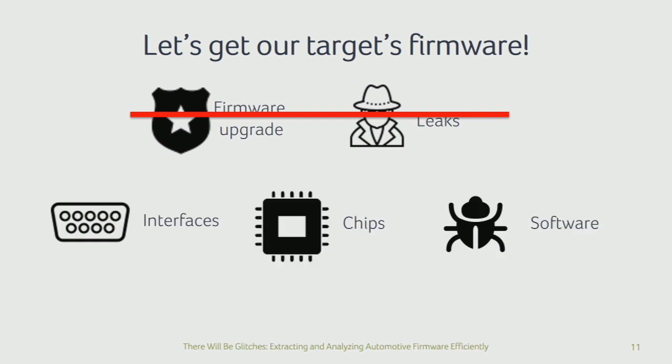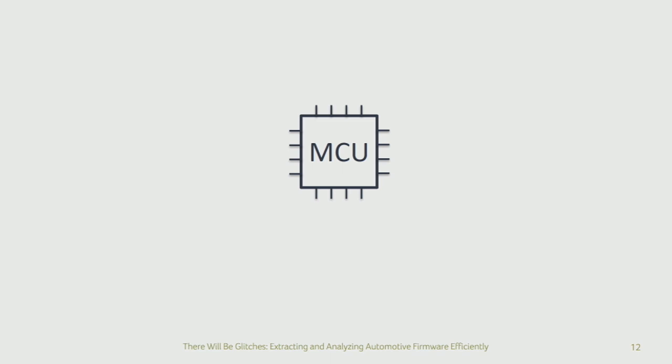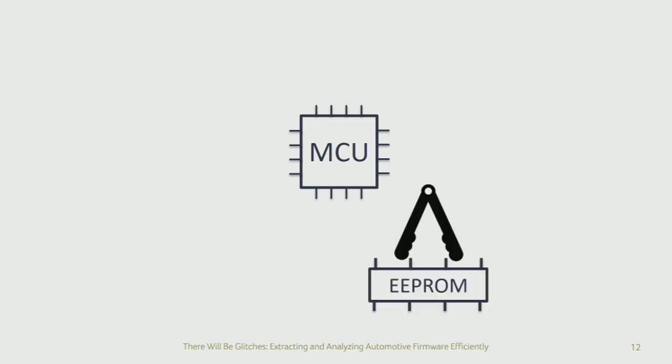With the dashboard in hand we started looking at the possibilities. There are some interfaces because the dashboard has to communicate with the rest of the car, and there's likely a chip running some form of software — but from outside we have no idea what's going on. Once we opened the device, we found a microcontroller talking to an EEPROM chip. We extracted the contents using standard tooling and identified lots of interesting data, but we had no way of interpreting it and certainly the firmware was not stored there.